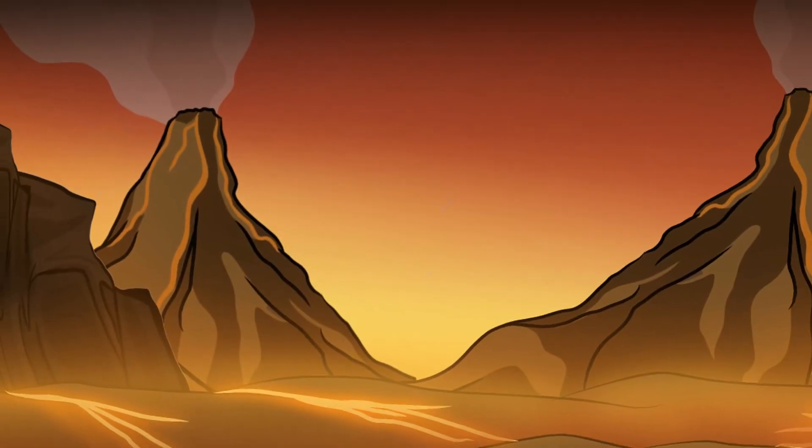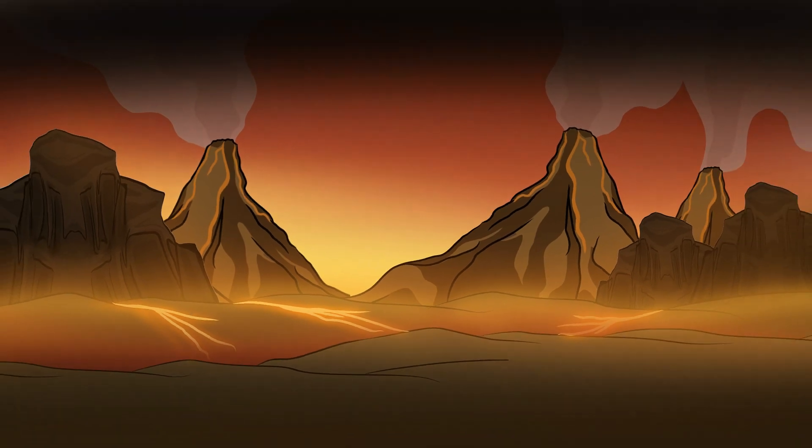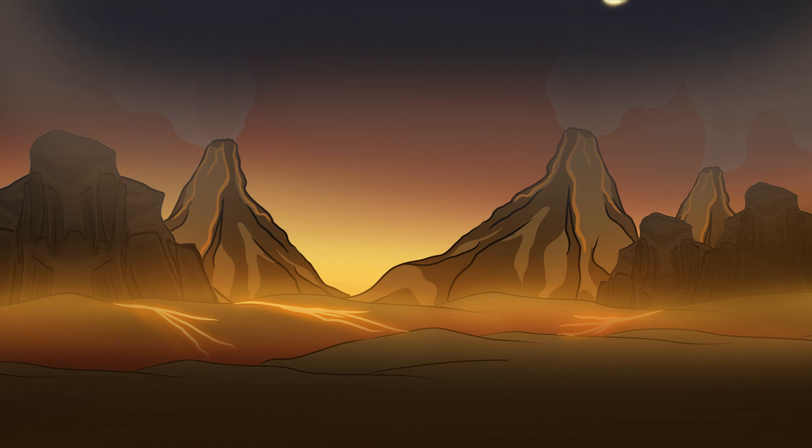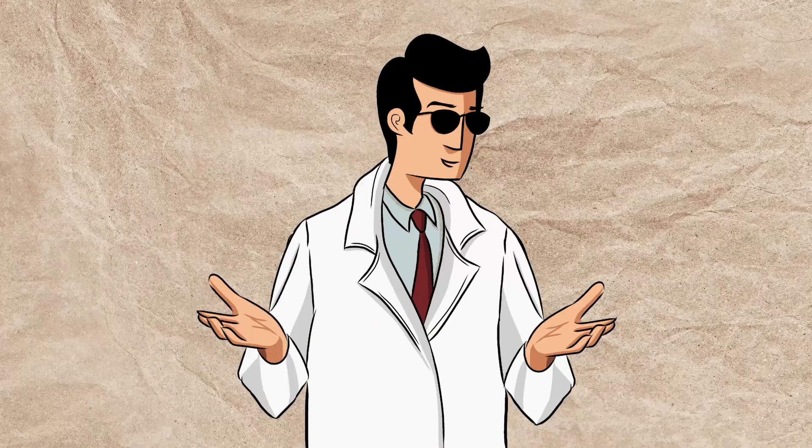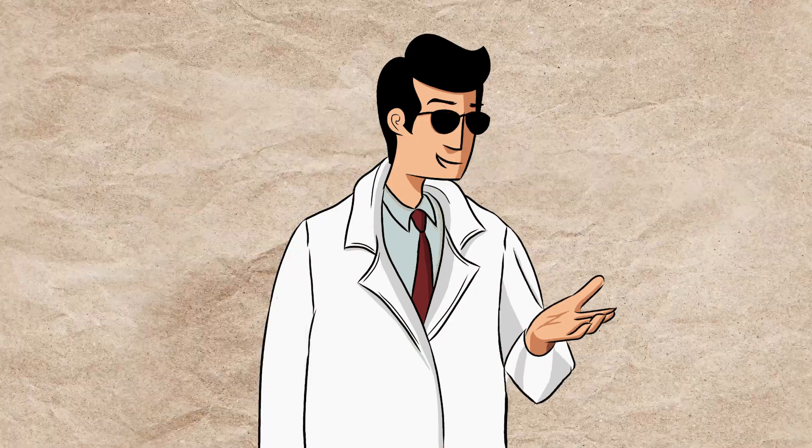Around 4.5 billion years ago, Earth was a chaotic and hostile place with volcanic activity, constant asteroid impacts, and a violent atmosphere. But by 4.3 billion years ago, conditions began to stabilize, making it possible for life to eventually take root.